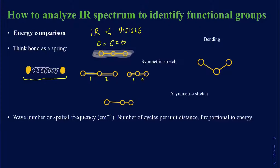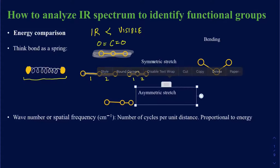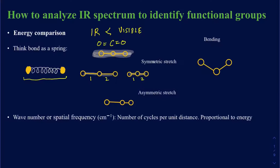On the other hand, you can also have an asymmetric stretch, where one bond is longer than the other. Bond 1 is longer and bond 2 is shorter. That's your asymmetric stretch. These two types of stretches will give you different signals in the IR spectrum, and we'll talk about those when we get into functional groups like amine and amide.